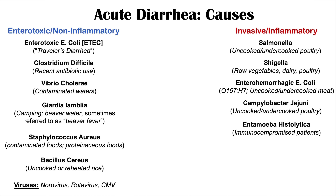To summarize, the two main categories for causes of acute diarrhea are enterotoxic or non-inflammatory, and invasive or inflammatory. Enterotoxic causes include: enterotoxic E. coli (ETEC), Clostridium difficile, Vibrio cholerae, Giardia lamblia, Staphylococcus aureus, Bacillus cereus, and viruses like norovirus, rotavirus, and CMV. Invasive causes include: Salmonella, Shigella, Enterohemorrhagic E. coli (O157:H7), Campylobacter jejuni, and Entamoeba histolytica.